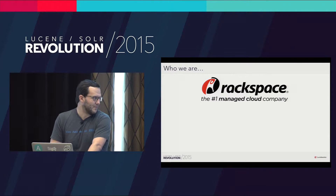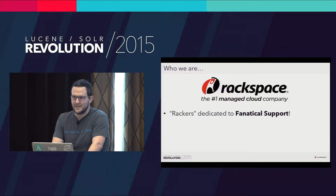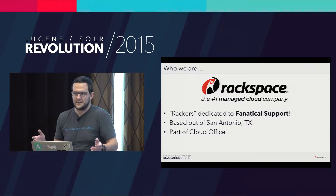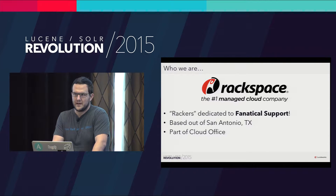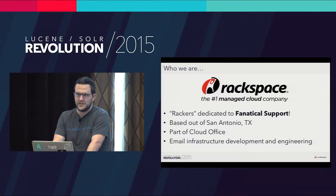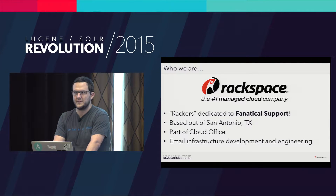Hi everybody. I'm Cameron, this is George. We're from Rackspace, the number one managed cloud company. We're both what we call rackers — that's a Rackspace employee. We're all about fanatical support, so we love doing awesome things for our customers to make their lives easier. We're from San Antonio. The big group inside Rackspace that we're a part of is called Cloud Office — that's email and collaboration software. We sell Exchange and our own email product. George and I work for the infrastructure team within Cloud Office, so our version of fanatical support is building products that help our support and operations team be awesome.